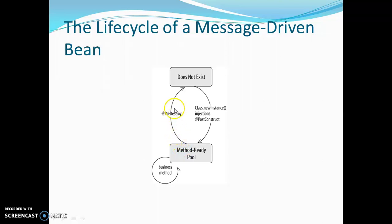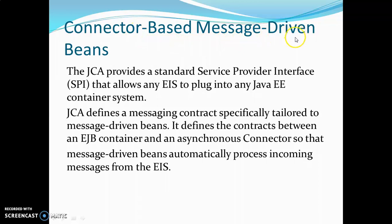The next thing we are going to see is connector-based message driven beans. Java Connector Architecture (JCA) provides a standard Service Provider Interface (SPI) that allows any enterprise service to plug into any Java EE container system. JCA defines that the Java Connector Adapter defines a messaging contract specifically tailored to message driven beans and defines the contract between an EJB container and an asynchronous connector, so that message driven beans automatically process incoming messages from enterprise information services. The JCA becomes very important whenever we are trying to work with a message driven bean.